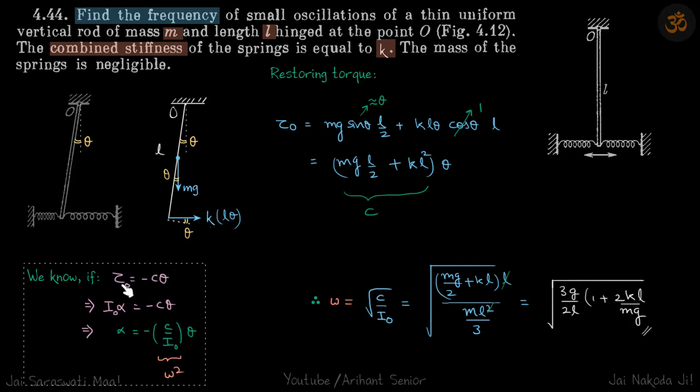And so we can rewrite this as I₀α equals -Cθ, and α equals minus C by I₀ theta. So this C by I₀ is omega squared. So if we can displace it a bit by an angle theta like this, and let's find the torque. And if this comes to be this form, then our omega will be root of C divided by I about O. So let's do that.